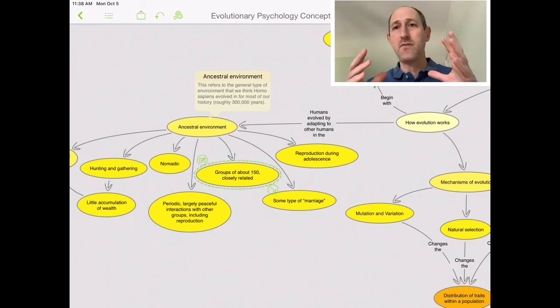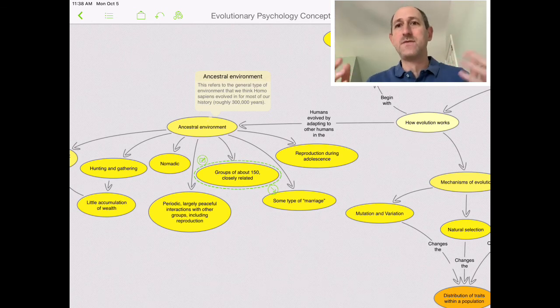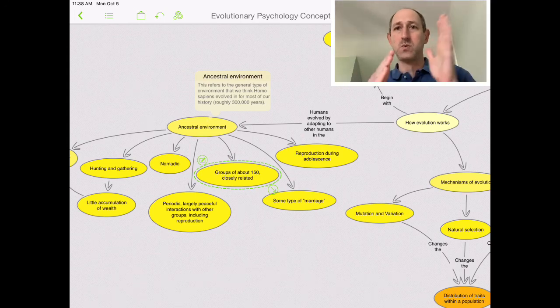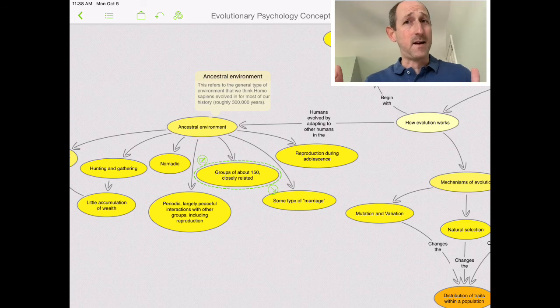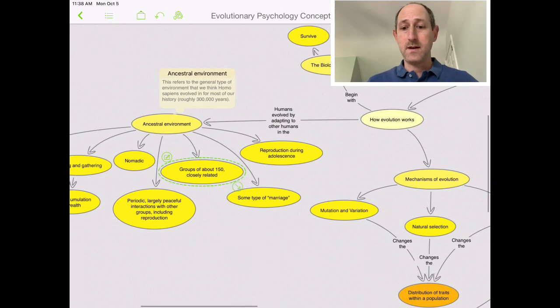But the tribe itself was usually roughly 150, generally more closely related than the people we hang out with now. Even though there's some moving between tribes for reproduction, you're still talking about a lot of cousins, second cousins, aunts and uncles in a small group, which has some advantages and disadvantages.